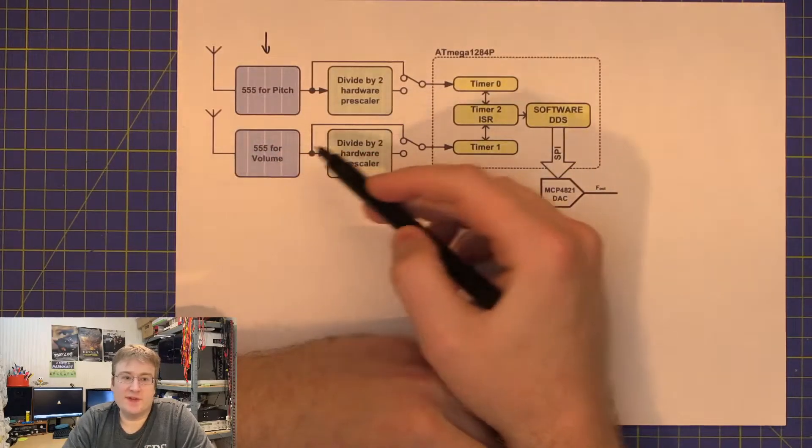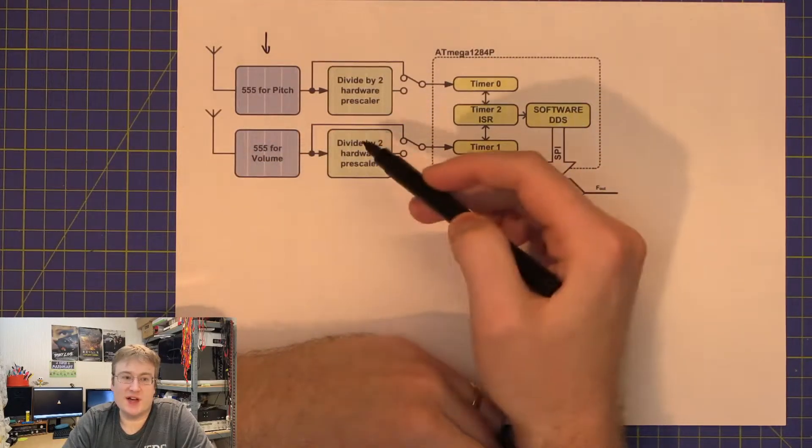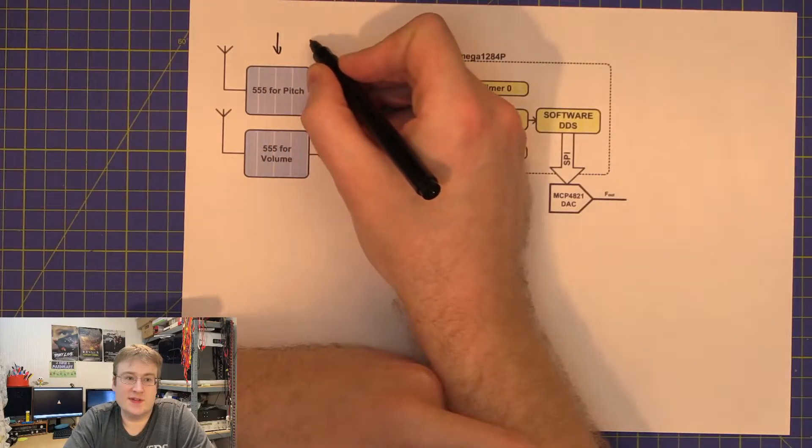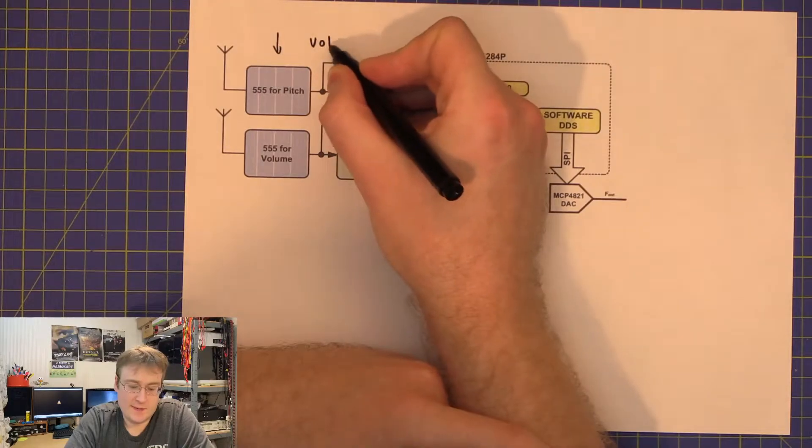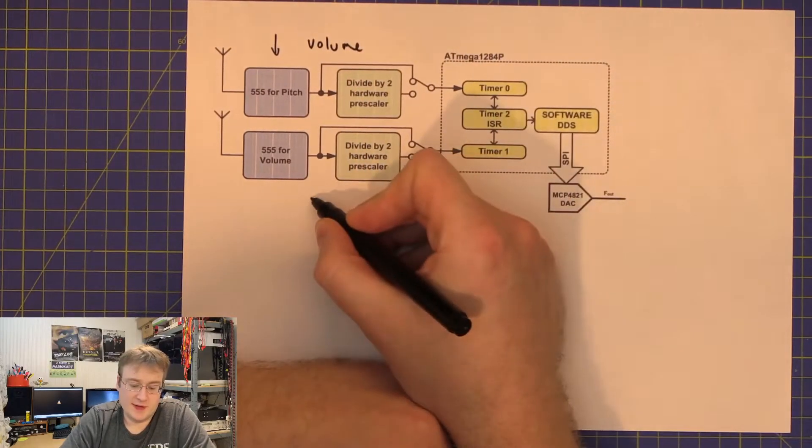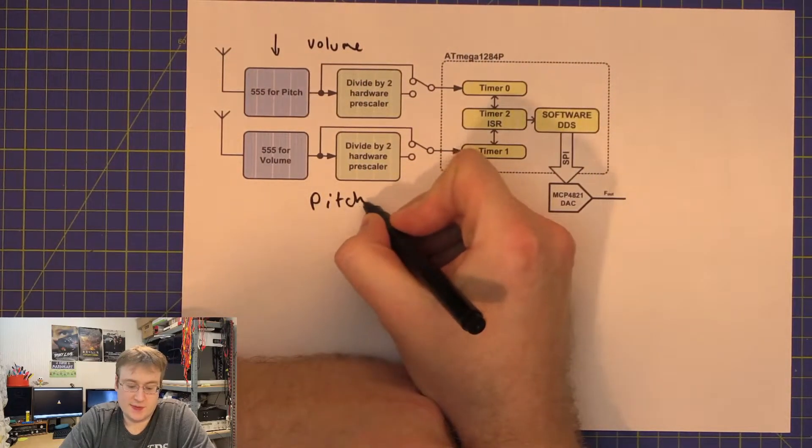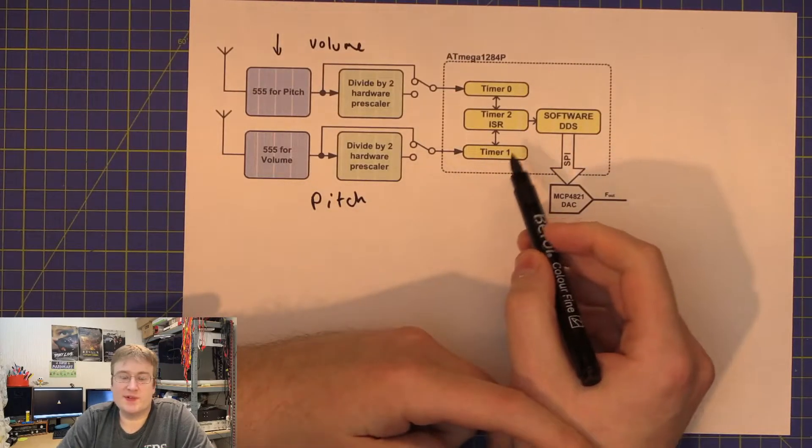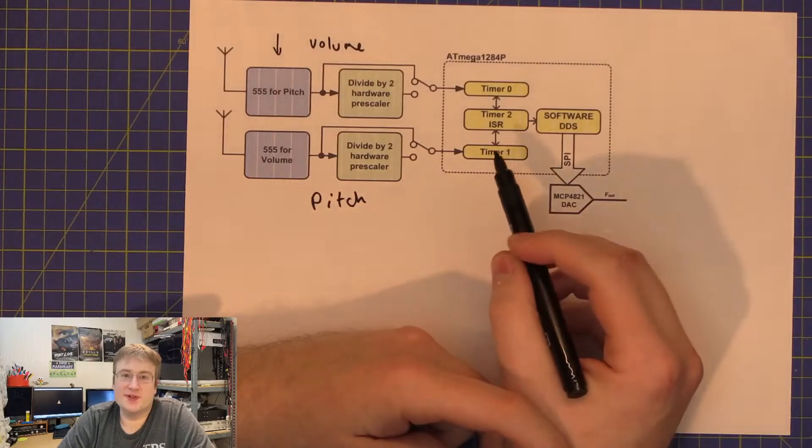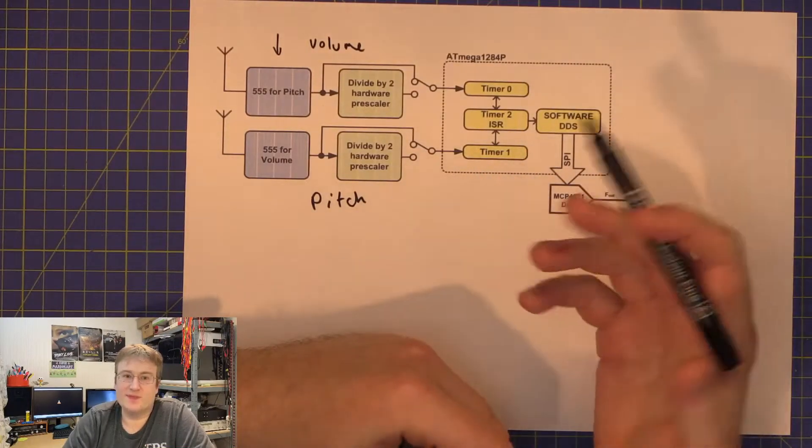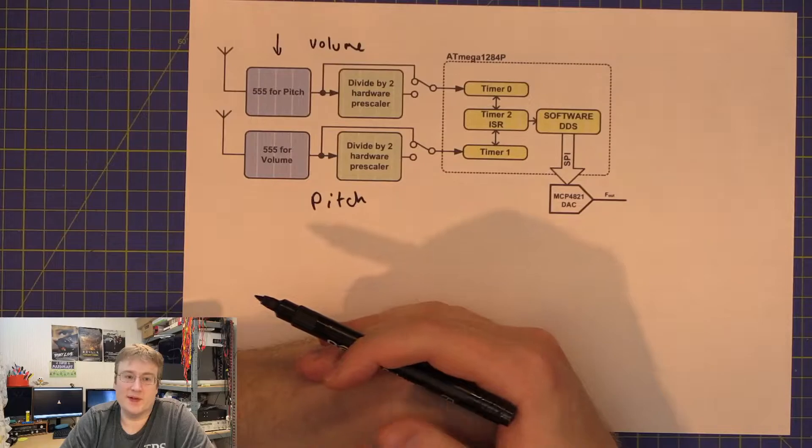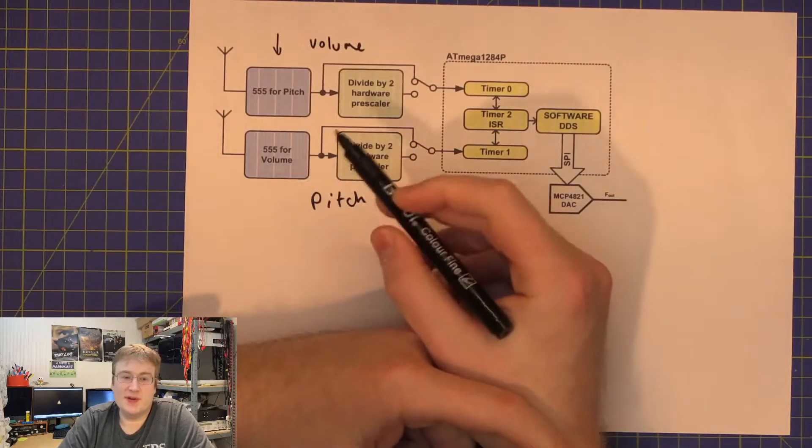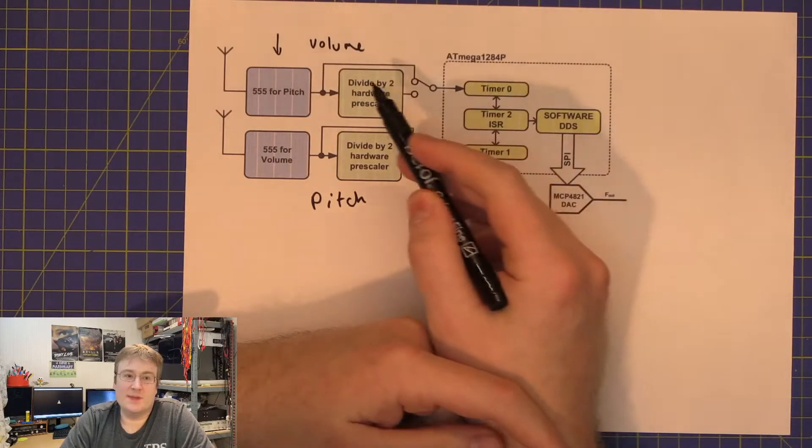I've got the same thing for the other channel, so this was the volume channel and this was the pitch channel. I thought it was more important to have a greater resolution of the pitch of the tone coming out than the volume. So I've used the full 16-bit timer to detect the pitch and an 8-bit timer to detect the volume.